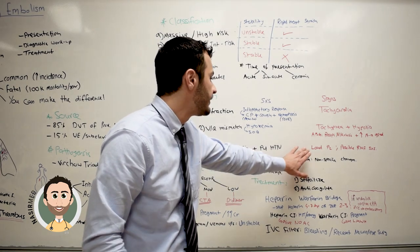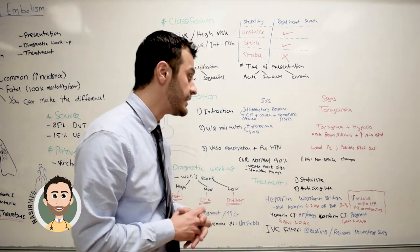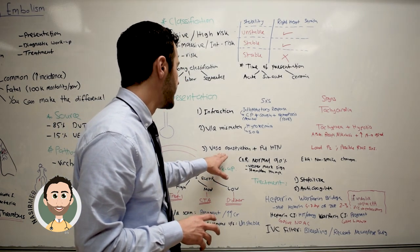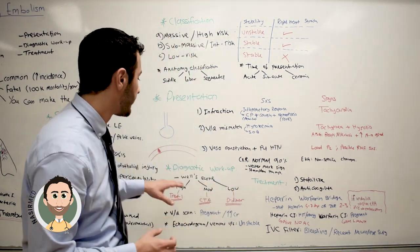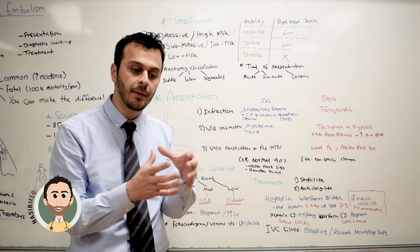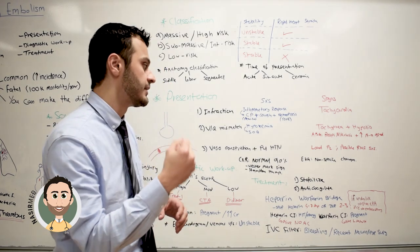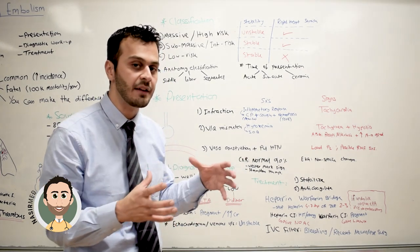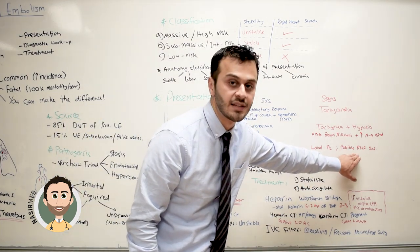Now, if this pulmonary hypertension becomes severe enough, the right ventricle will have a hard time pumping blood through those vasoconstricted vessels. Eventually, the right ventricle will get tired and fatigued, and that can lead to right heart failure symptoms.